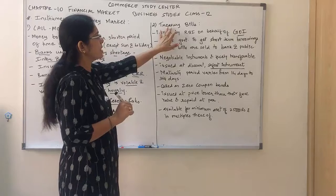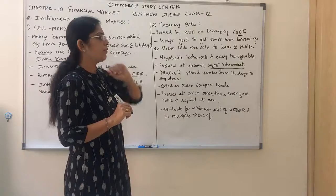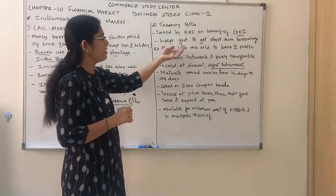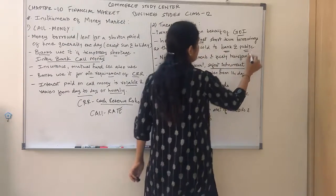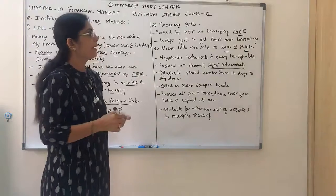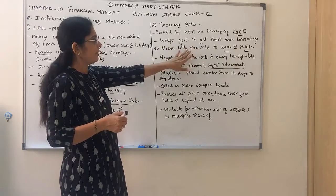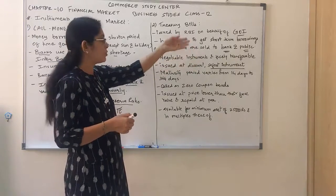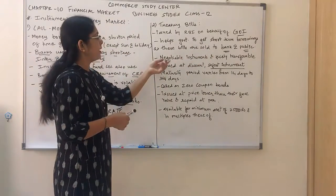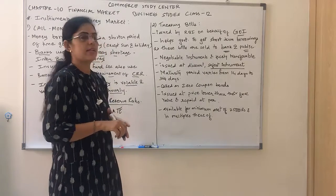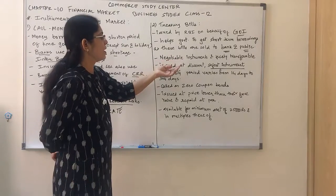Treasury bills are needed so that the government can get short-term borrowings. These bills are sold to banks and the general public, so the government can raise money through treasury bills in a shorter period of time. Since they are issued by RBI, they are safe and banks and the public will be ready to take them. It is a negotiable instrument and freely transferable — if you want to transfer it from one person to another, it is possible.